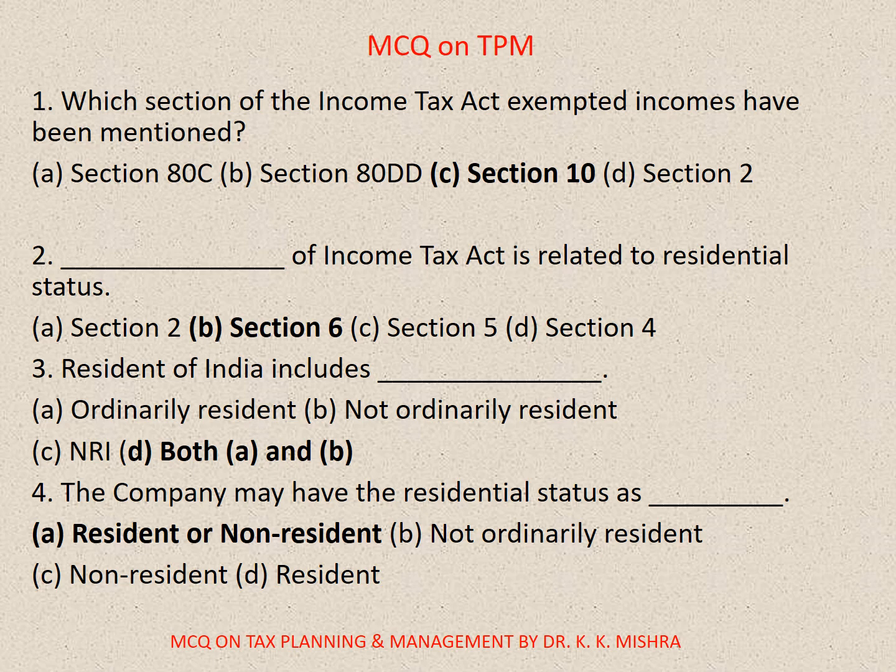Question number 3: Resident of India includes — A. Ordinary resident, B. Not ordinarily resident, C. NRI, D. Both A and B. The correct option is D. Both A and B.